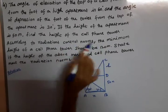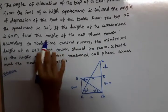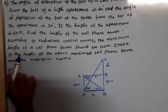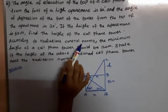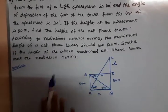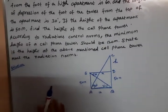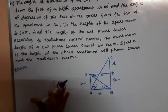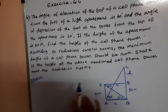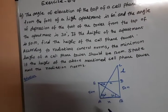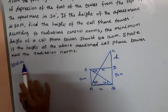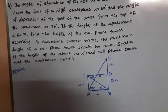Find the height of the cell phone tower. According to the radiation control norms, the minimum height of the cell phone tower should be 120 meters. State if the height of the above-mentioned cell phone tower meets the radiation norms.